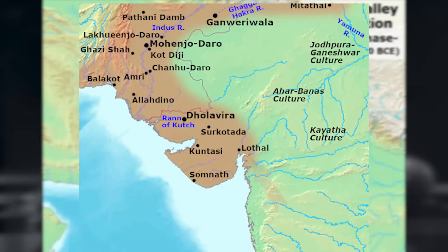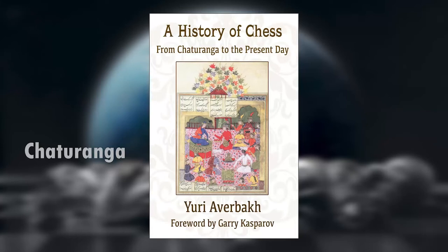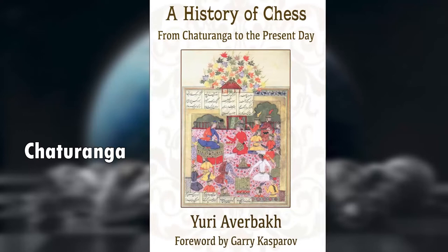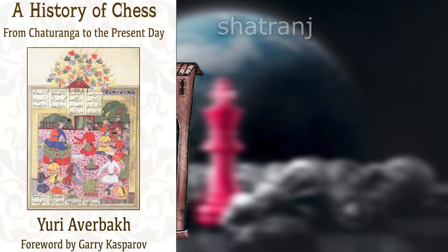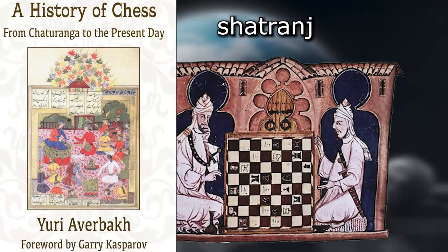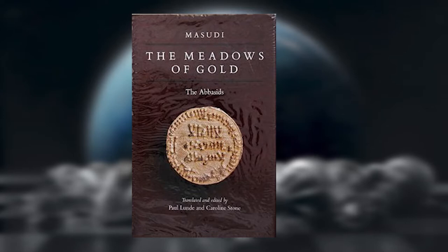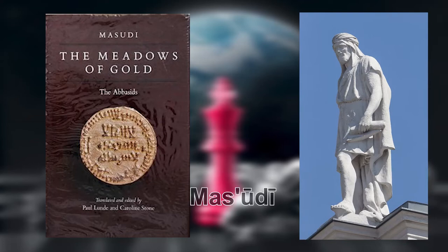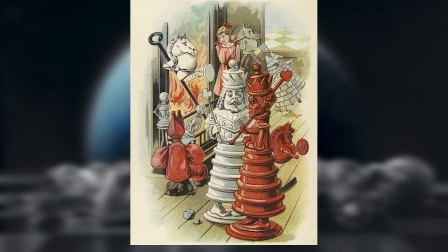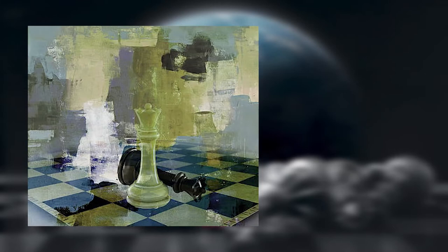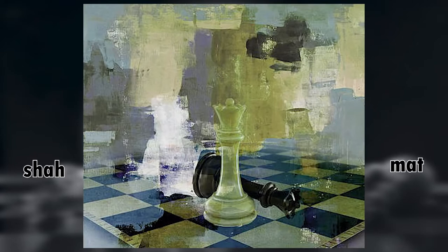In India, chess was known as Chaturanga. It was passed on to the medieval west through the Middle East, particularly Persia, and it was adopted as Chetranche in Sassanid Persia. A description of the game can be found in the 9th century work The Golden Prairies, or the Meadows of Gold, by Al-Masoudi. Many terms come from Persia — the expression 'checkmate,' for example, is derived from the Persian 'Shah' and the Arabic 'Mat,' meaning 'he is dead.'